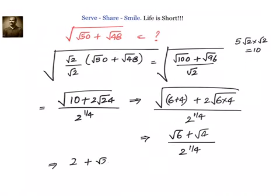Now what is √4? 2. What is √6? √6 can be written as √2 into √3 divided by 2 power 1/4. So your answer will be 2 power 3/4 plus 2 power 1/2.